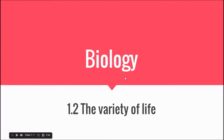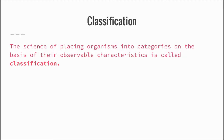Hello guys, and welcome to our video. Today we'll talk about the variety of life. Let's start with the word classification. Classification is the science of placing organisms into categories on the basis of their observable characteristics.